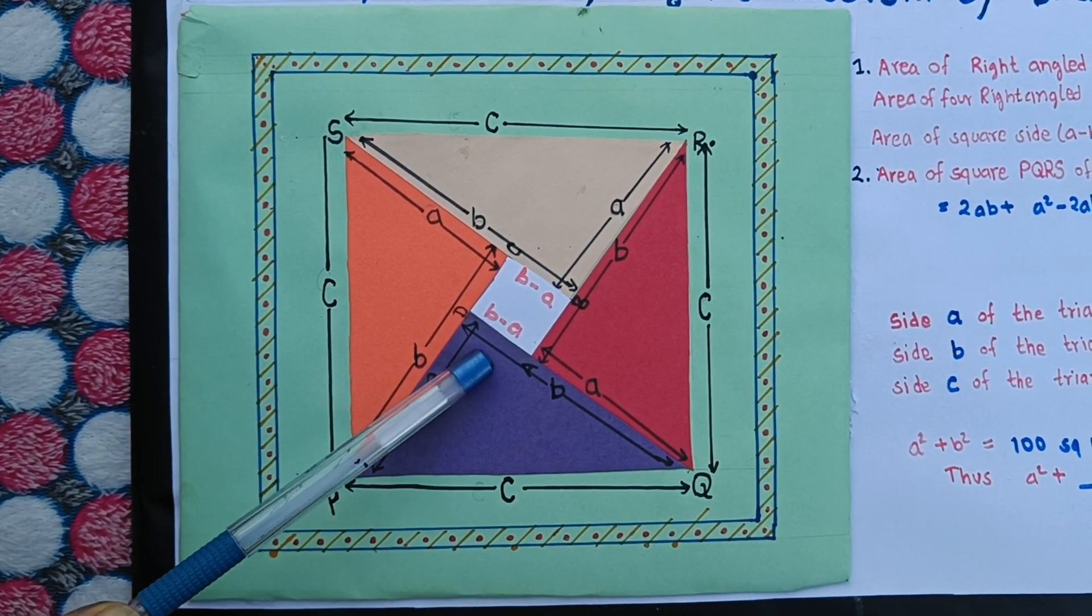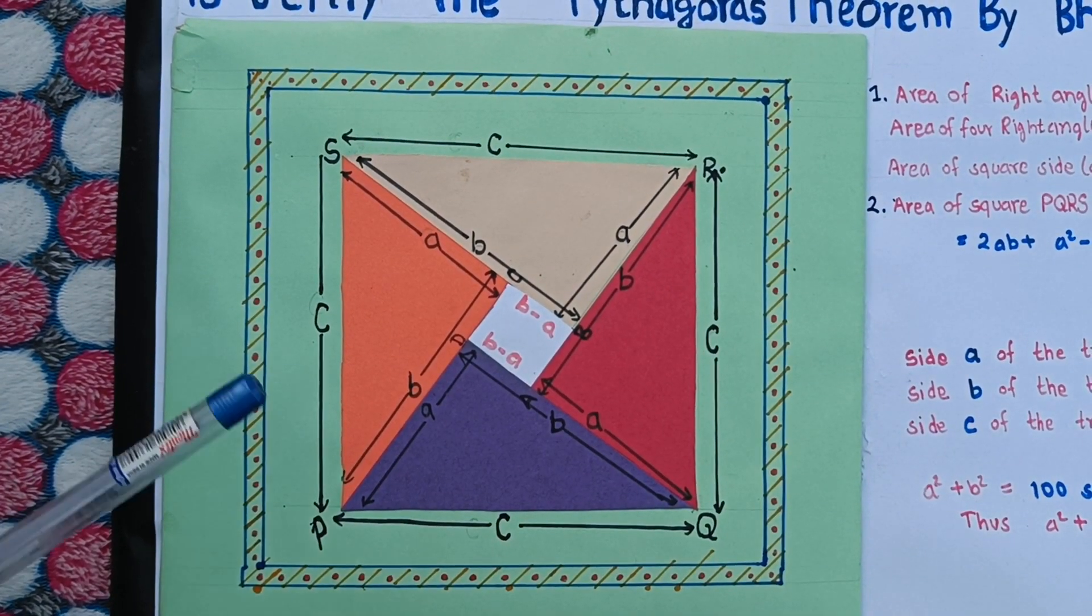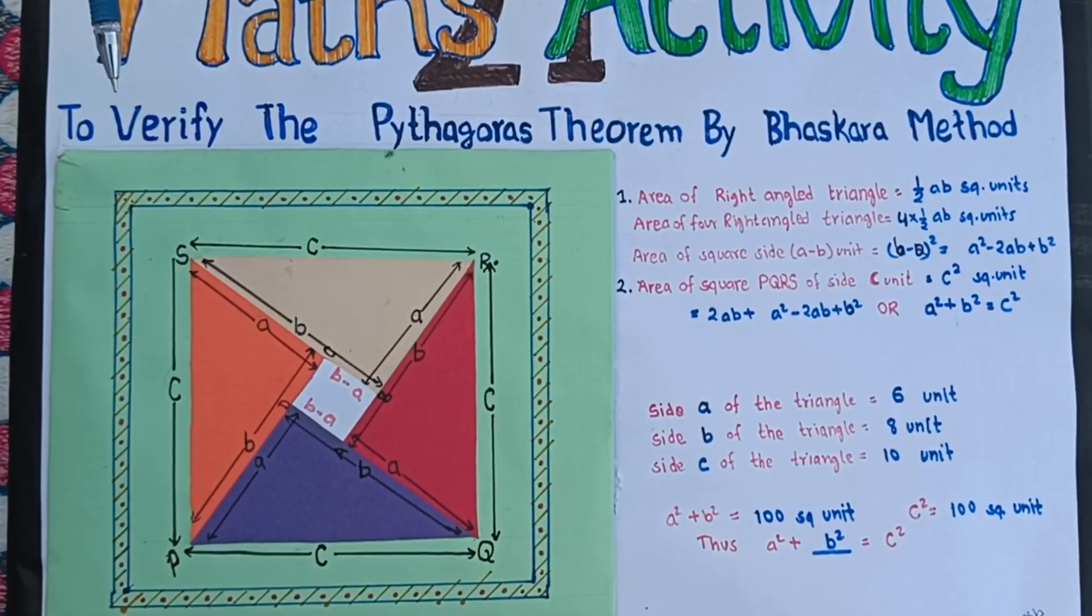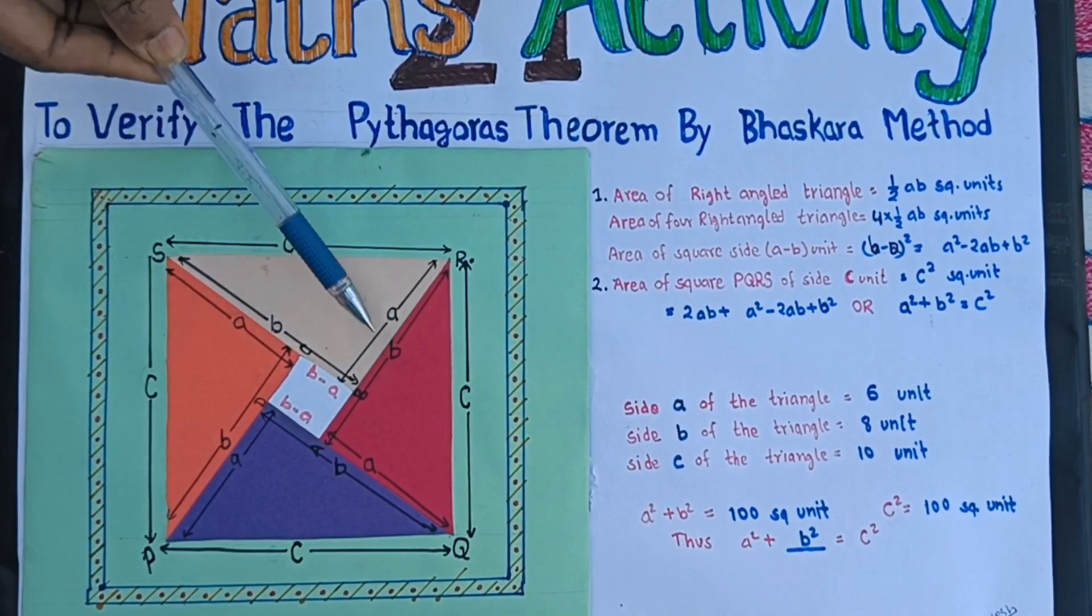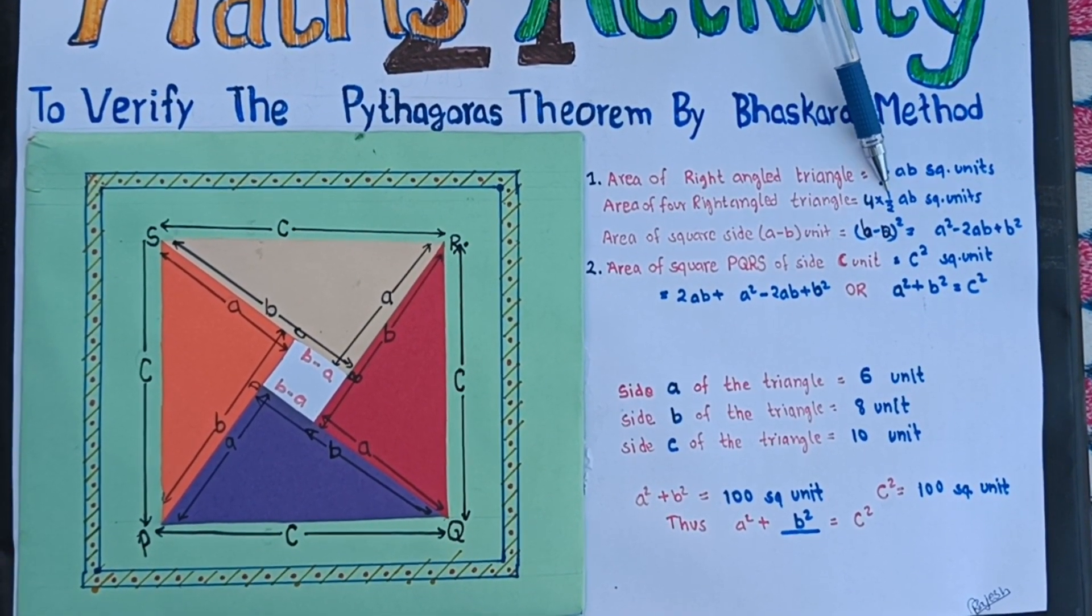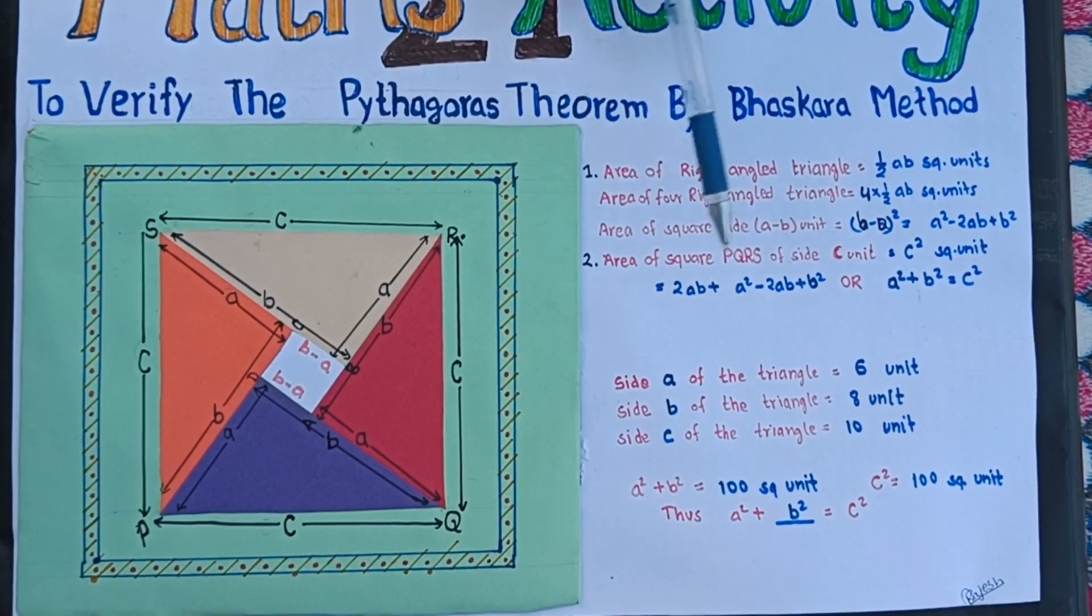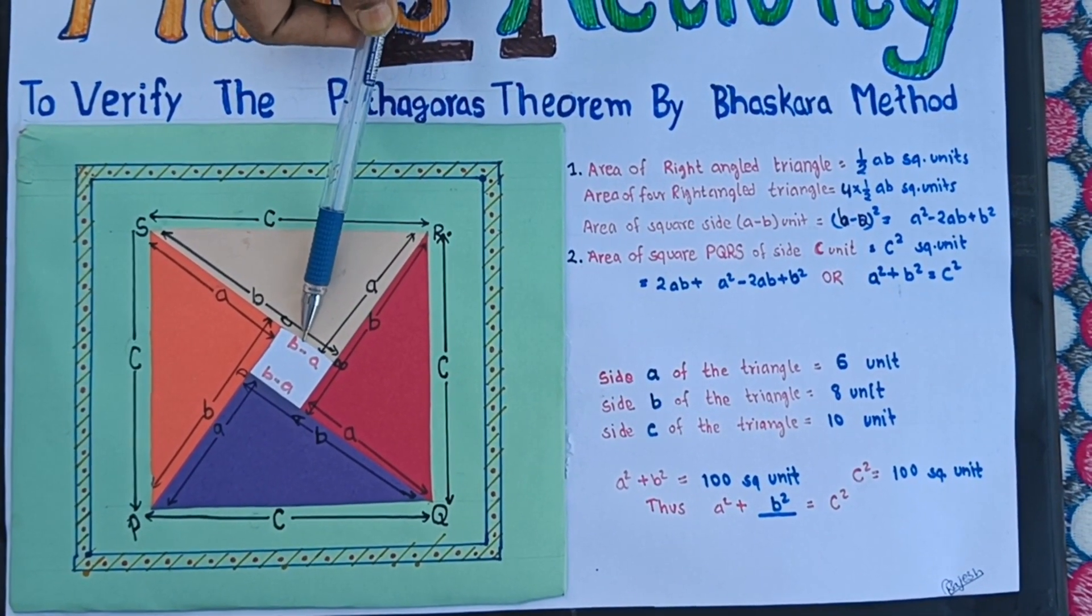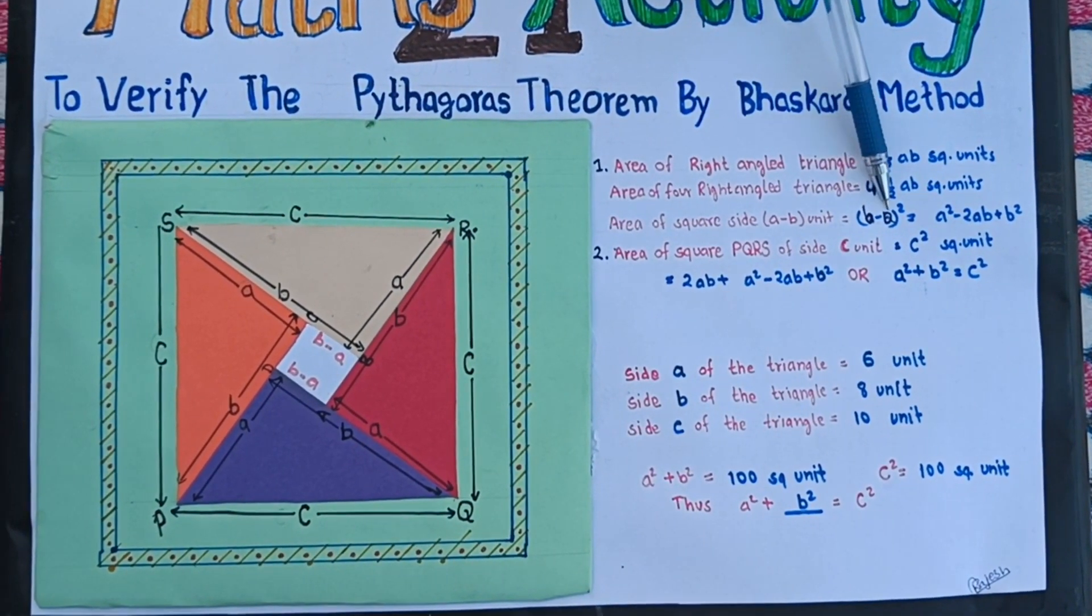Same way here, it forms a square with side B minus A unit. The area of four right-angled triangles is four times one-half times base times height. And the area of inner square with side B minus A is B minus A whole square, which equals A square minus 2AB plus B square.